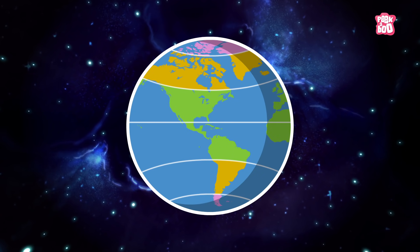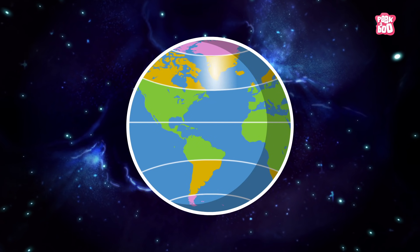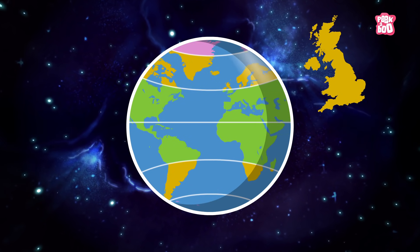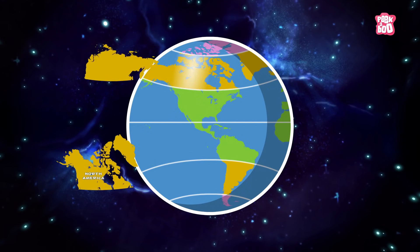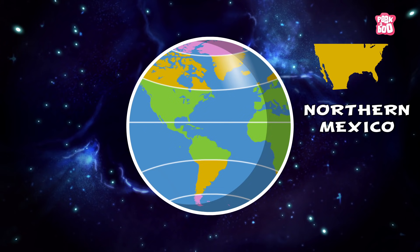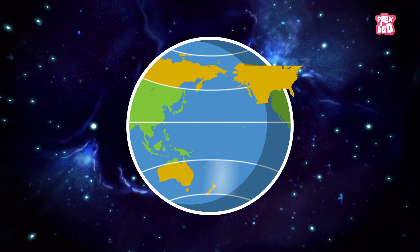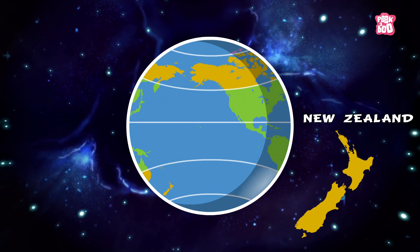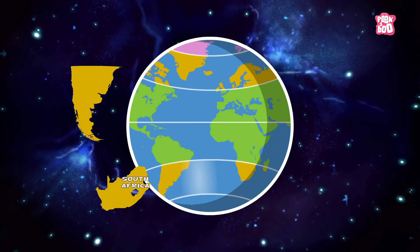These are the regions that fall in the temperate zone. The north temperate zone includes Great Britain, Europe, Northern Asia, North America and Northern Mexico. The south temperate zone includes Southern Australia, New Zealand, Southern South America and South Africa.